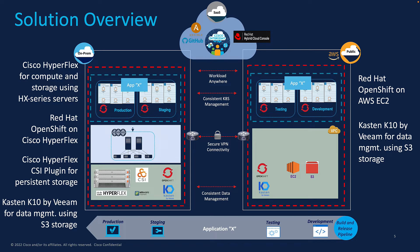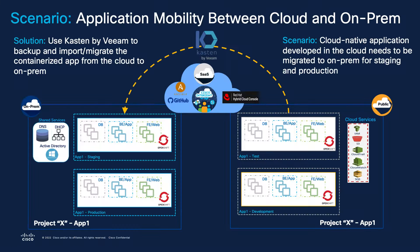The application used for this demo is an e-commerce cloud-native application called SockShop. The scenario is to take an enterprise's cloud-native application that was developed and tested in the cloud and bring it back on-prem for staging and production. We will use Kasten K10 to first backup the application and verify we can restore it if needed, and then show how that same application — including all configuration and data — can be migrated from the cloud to the on-prem infrastructure using Cisco HyperFlex storage.